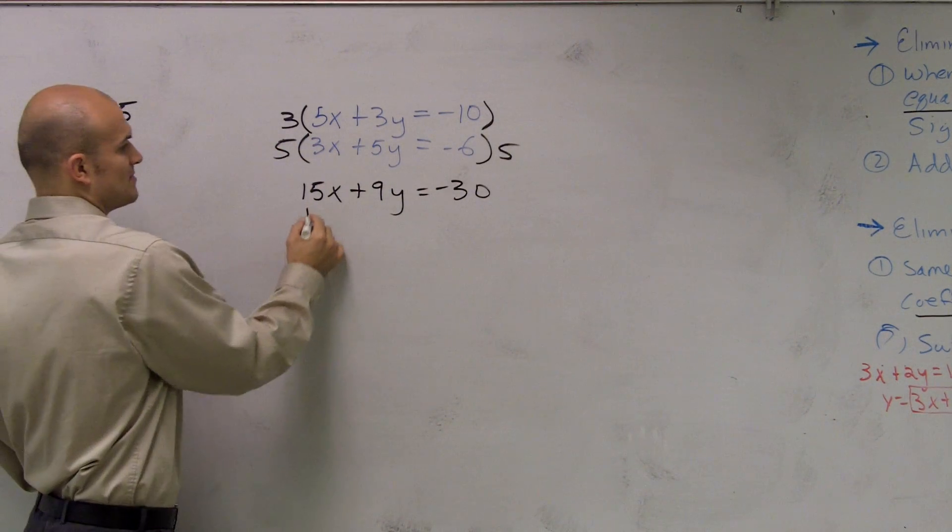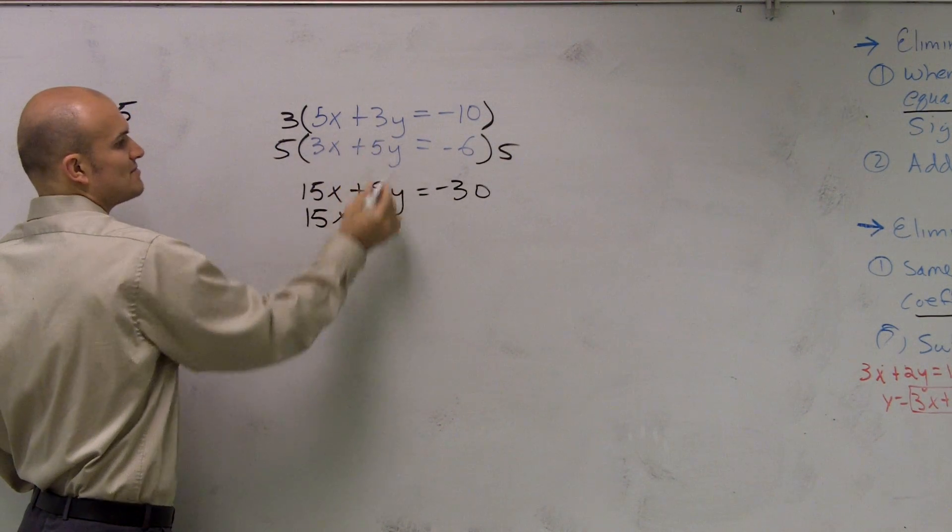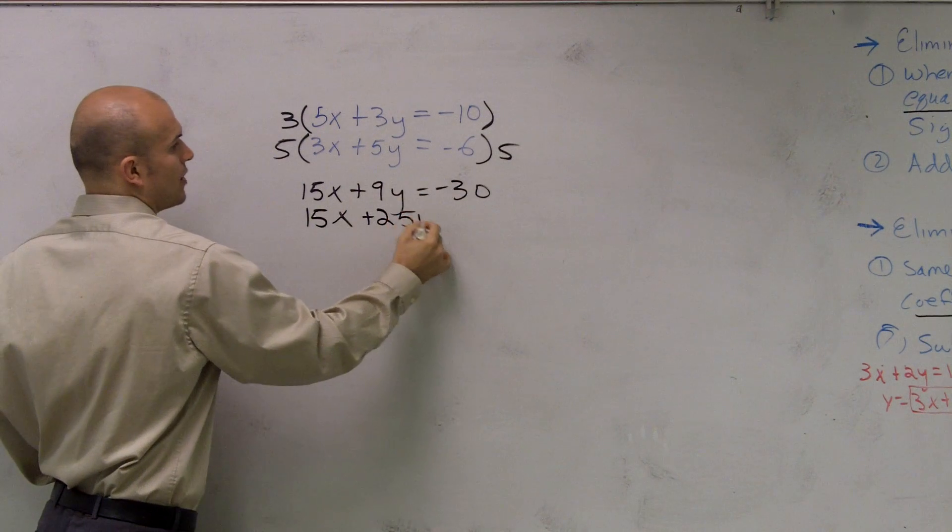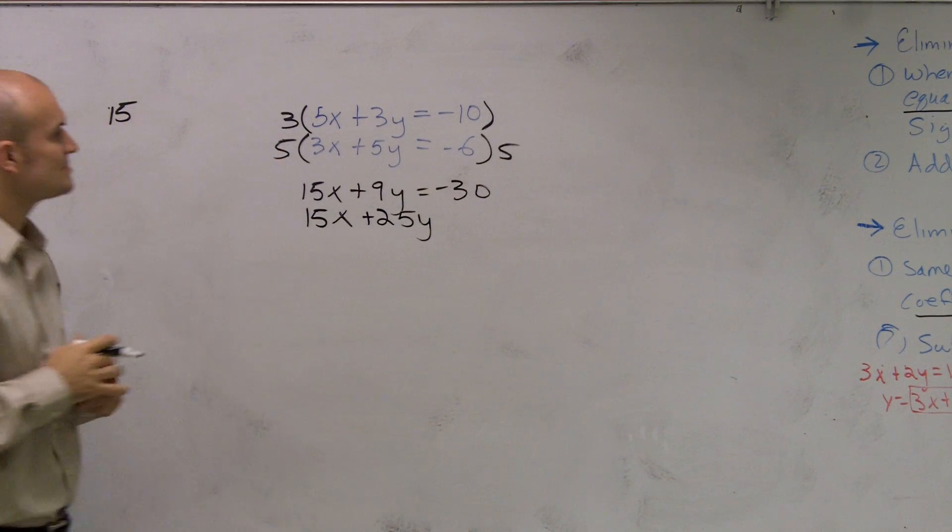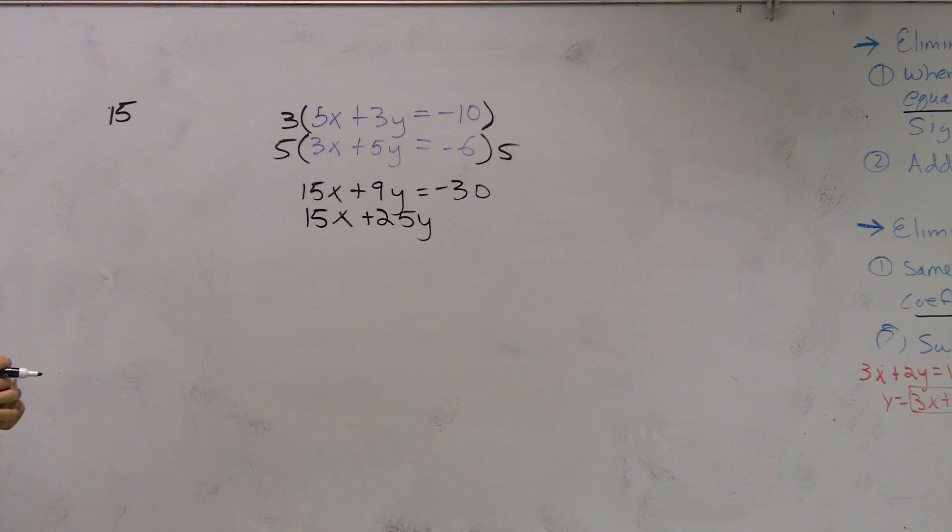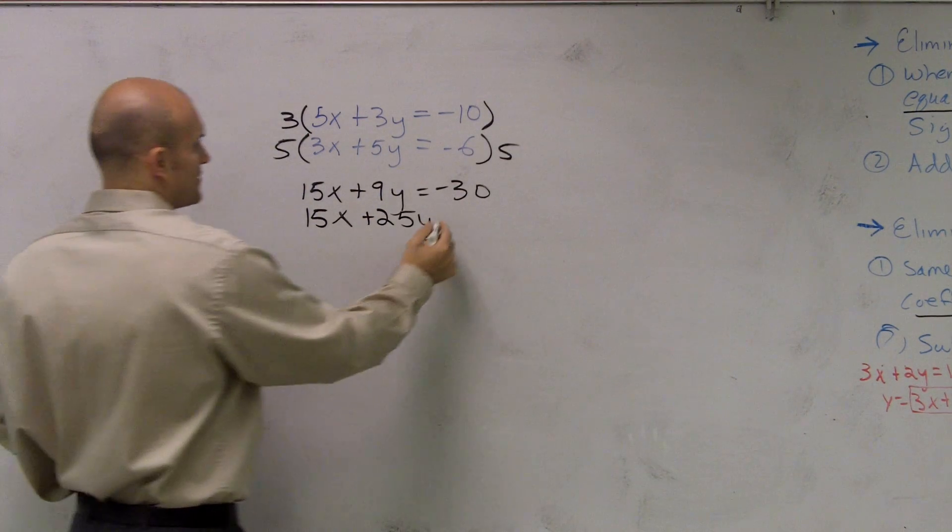5 times 3x gives me 15x, 5 times 5y gives me 25y, and 5 times 6 gives me negative 30.